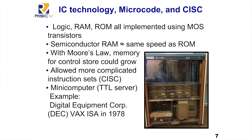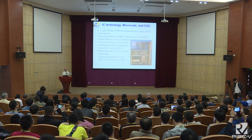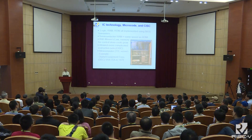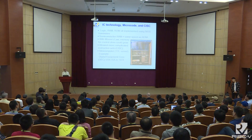Moving forward in time: instead of building from independent transistors, we started using MOS integrated circuits. When we moved to ICs, everything was roughly the same speed — logic, RAM, and ROM were all built from the same transistors with no performance difference between them. Moore's Law was in full bloom, doubling transistors every year or two. With more transistors, designers used the microprogrammed approach to build much bigger microprograms, which meant much more complicated instruction sets — what we call CISC: complex instruction set computers.